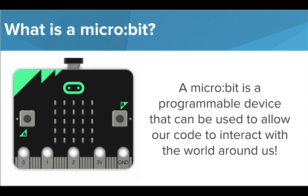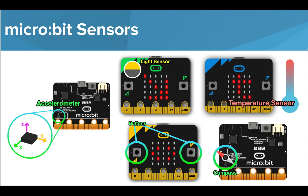In this course, we're going to be using microbit devices to create programs that allow our device to interact with the world around it. Even though your microbit looks simple, it has sensors that can help it note changes in the environment and react based on the program you've written. It can sense acceleration, light, temperature, and direction using built-in sensors.